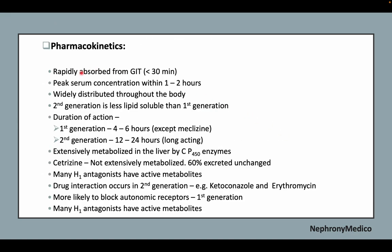H1 antagonists are rapidly absorbed from the GIT. Duration of action is 4 to 6 hours for first generation and 12 to 24 hours for second generation. Cetirizine is not extensively metabolized and 60% is excreted unchanged. Drug interactions occur in the second generation, and first generation is more likely to block autonomic receptors.